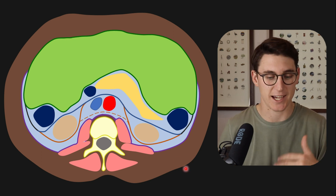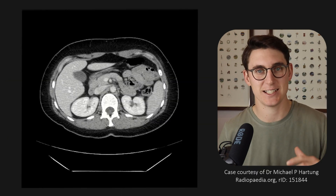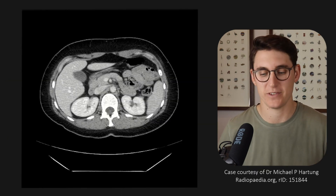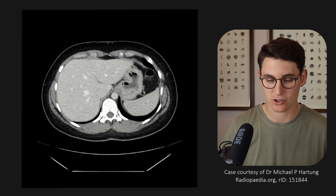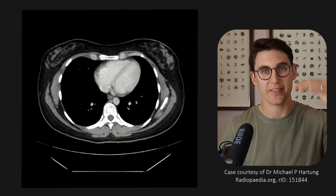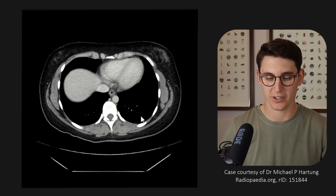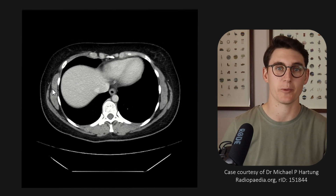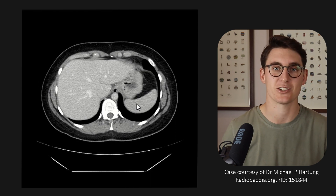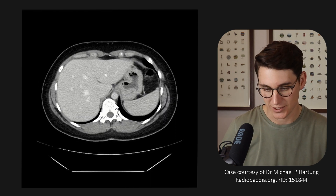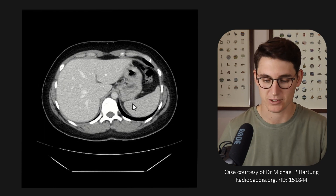Let's have a look at a CT scan and find those organs. Here we have an axial slice CT scan — a normal scan of the abdomen. As always, I'm going to start in the thorax when looking at the abdomen, and scroll all the way up before heading inferiorly. As we scroll inferiorly we can see our liver coming into view on the patient's right hand side and our spleen on the patient's left hand side. We can see the diaphragm here separating the thoracic cavity from the abdominal cavity.